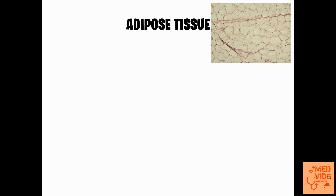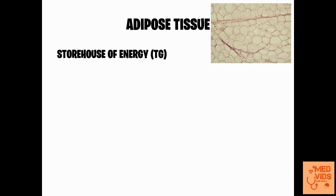The adipose tissue is the storehouse of energy, storing enormous amounts of energy in the form of triacylglycerol. When needed, hormone-sensitive lipase acts to break down triacylglycerol in the adipose tissue and releases free fatty acids into the circulation to meet the body's demands. In starvation, this triacylglycerol is hydrolyzed to supply free fatty acids to various organs.